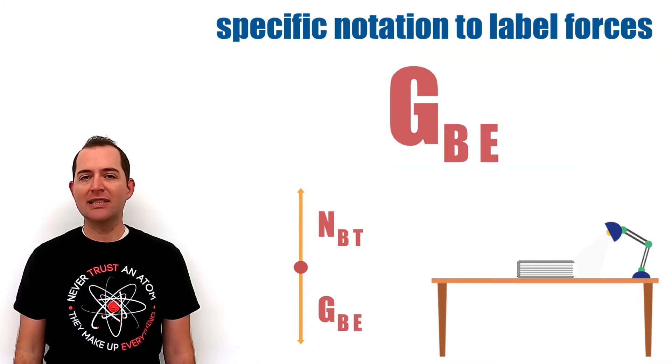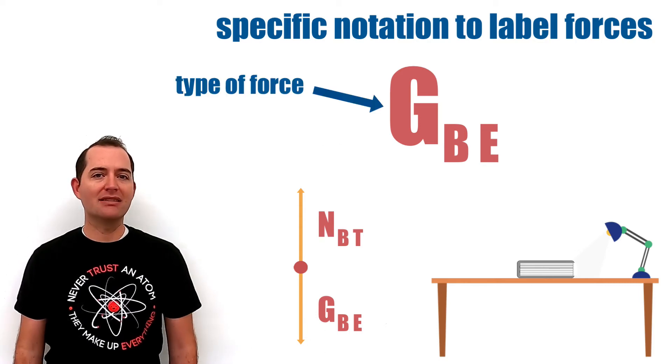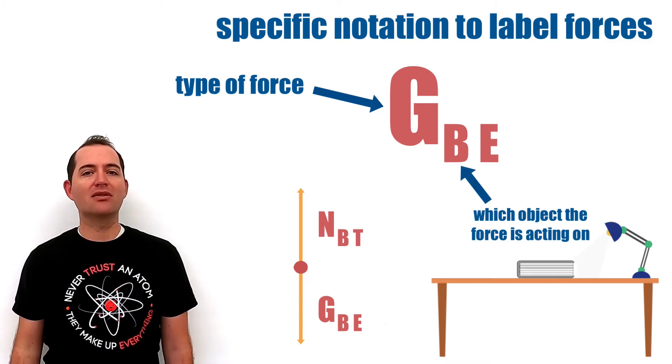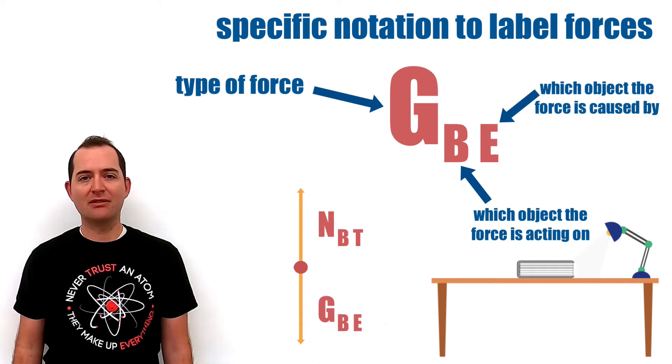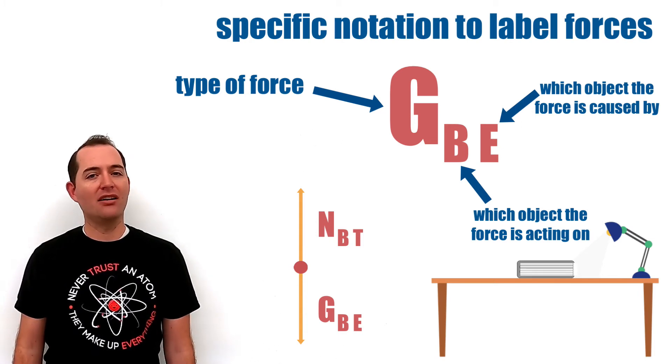You'll notice that we're using a specific notation to label the forces acting on the object. The large letter represents the type of force. In this case, gravity. The first subscript represents which object the force is acting on and the second subscript represents which object the force is caused by. So in the case of gravity, it is on the book caused by the earth.